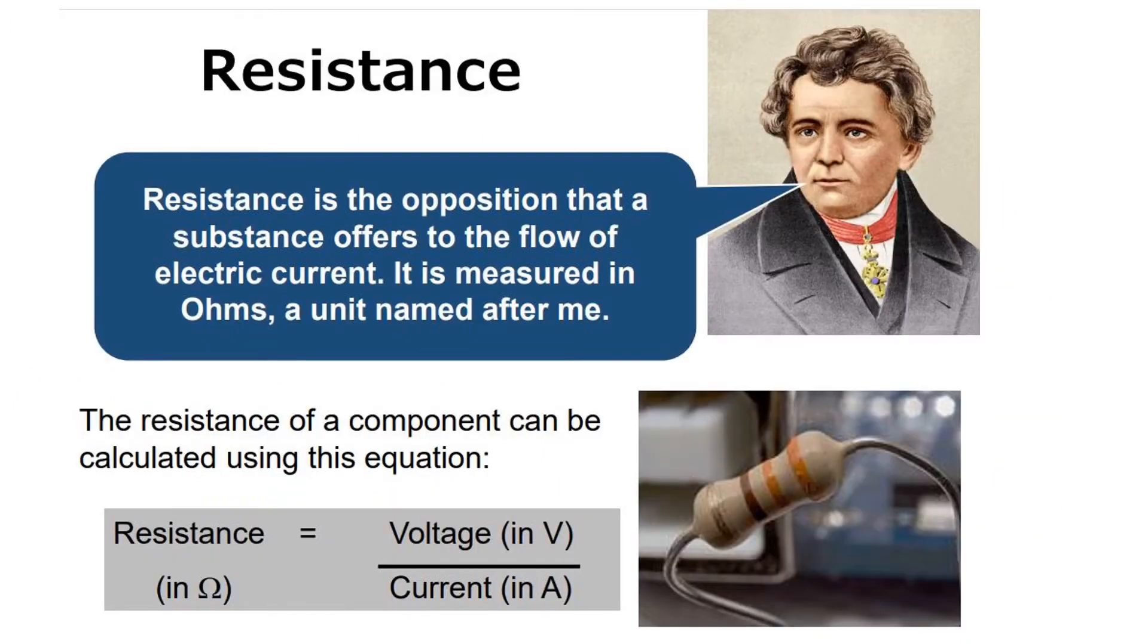Quick revision of resistance: resistance is the opposition that a substance offers to the flow of electric current. It is measured in ohms, a unit named after George Ohm shown here. The resistance of a component can be calculated using the equation: resistance equals voltage divided by current. I'm sure you are familiar with this equation.